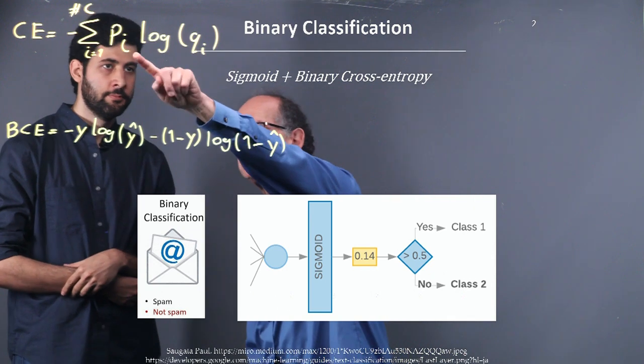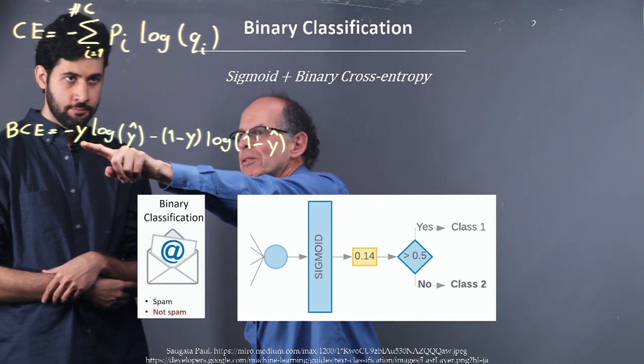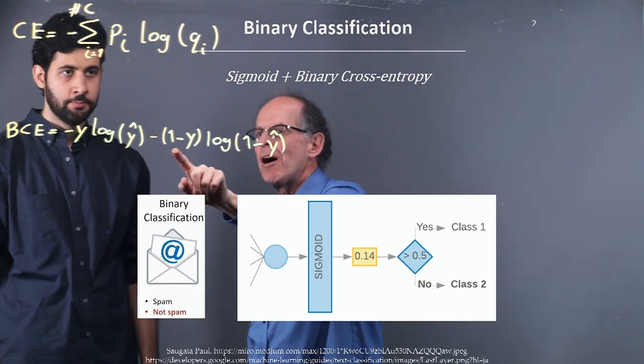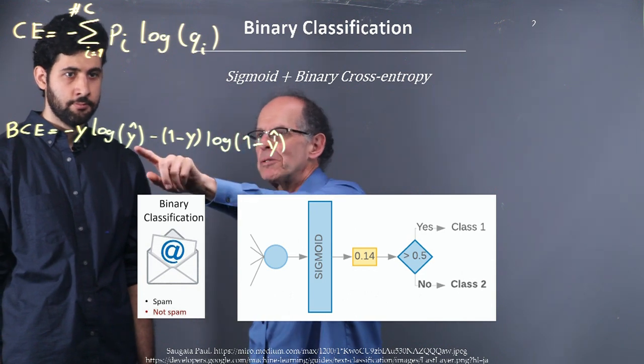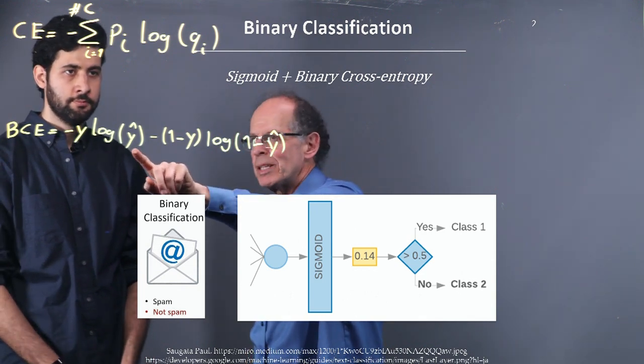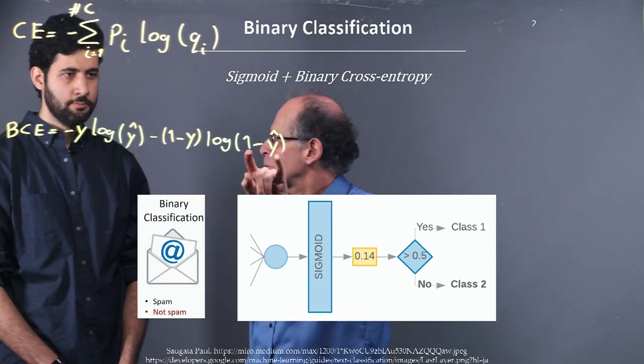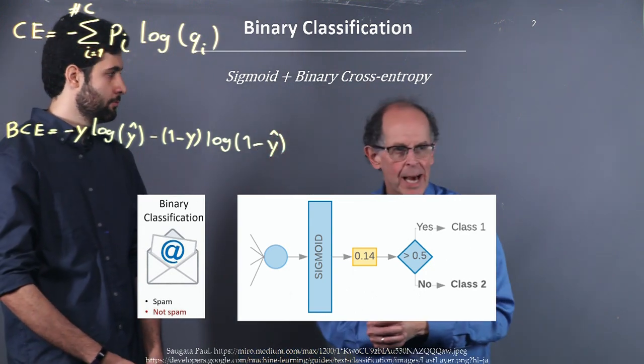So for example, P1 will be this value here, which is going to be a probability between 0 and 1, and its complement. Same with the predicted from the model, the QI. So this is one Y hat for the probability of, say, class one, and the other one will be the complement, one minus Y hat. So that's for two classes.